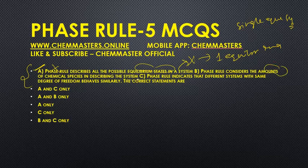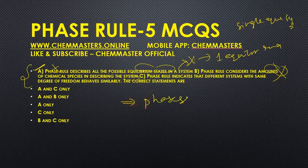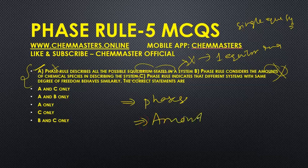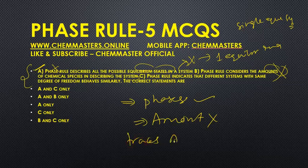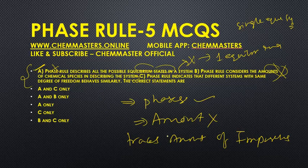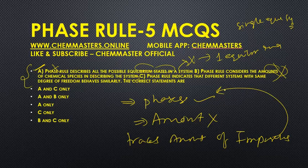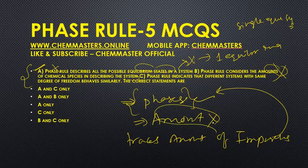The second statement says phase rule considers the amounts of chemical species in describing the system. This is also wrong, because phase rule only considers the phases but not the amounts of chemical species present. This is actually a limitation of phase rule: if a system has trace amounts of impurities, they can alter the number of phases, which in turn alters the degree of freedom, because the system only considers phases and not the amounts of chemical species present.